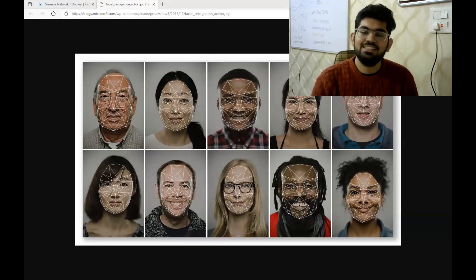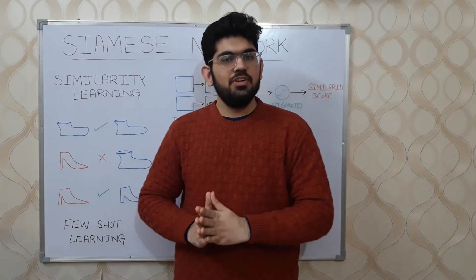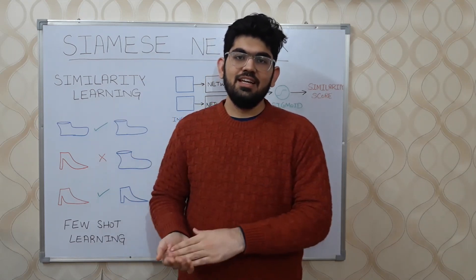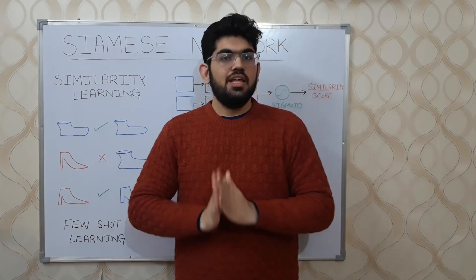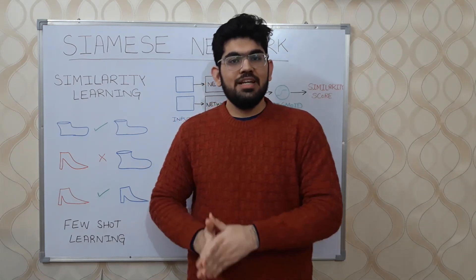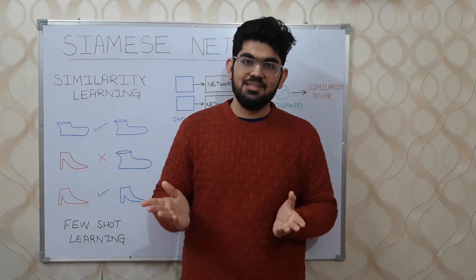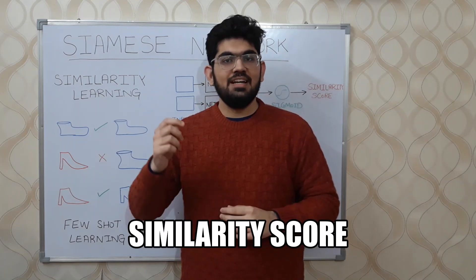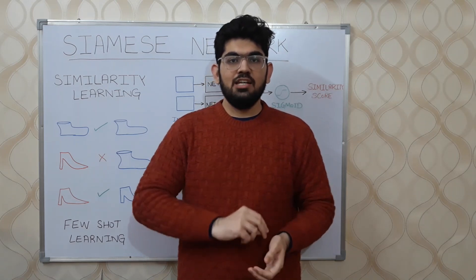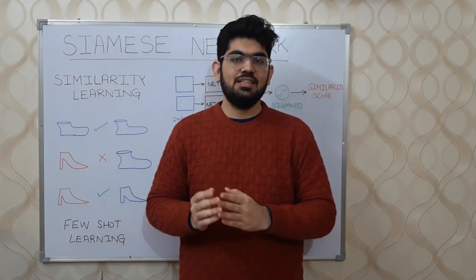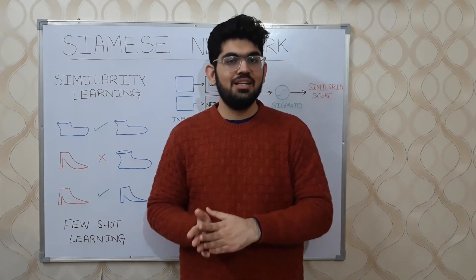Now let us discuss the technical details of the facial recognition problem and Siamese networks. The problem we are going to discuss is similarity learning, and we are going to solve it using Siamese networks. In the problem of similarity learning, given different input images, we are required to predict how much similar and how much dissimilar the given images are. This can be done by predicting a similarity score — a lower value suggests dissimilarity and a higher value suggests similarity.